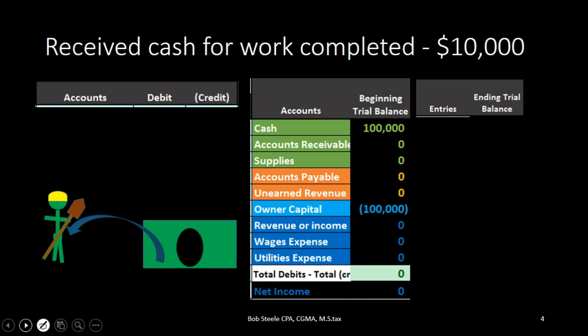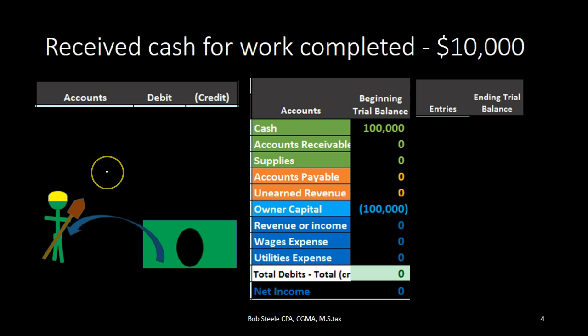In this lecture we're going to record the transaction of receiving cash for work that has been completed. This is one of our favorite transactions as a business — we did work and we are receiving cash at that same point in time. We're going to record the transaction on the left hand side, where the journal entry will go. On the right hand side we will post that transaction in a shorthand fashion to the trial balance to see the impact.